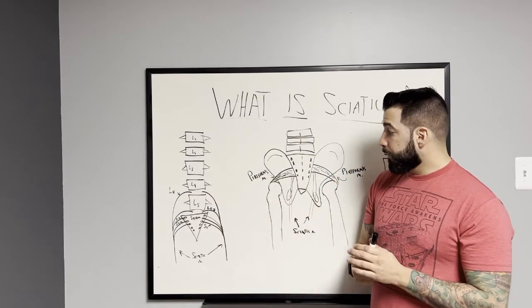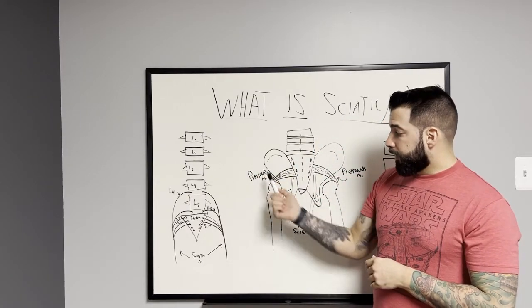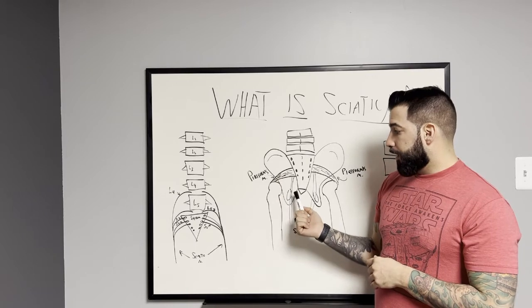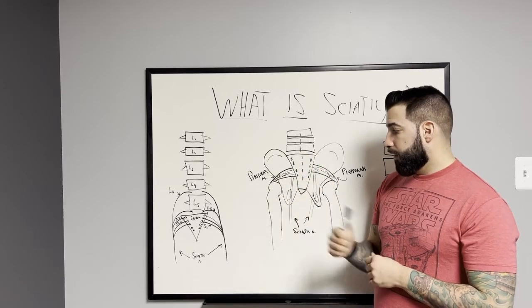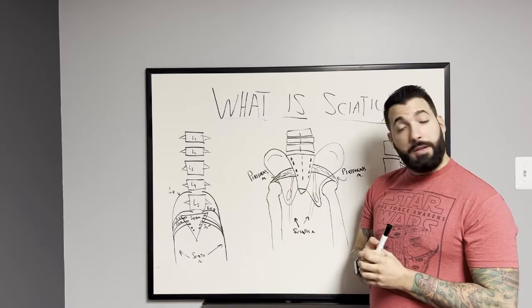Let me come over to our second drawing here, which has our iliac crest, our ischial tuberosity, our sacrum and the lumbar vertebra, our femur, and the piriformis muscle.